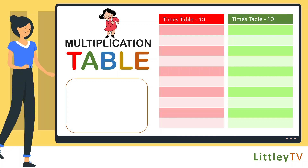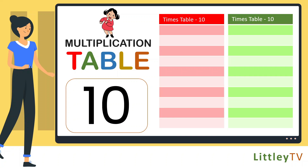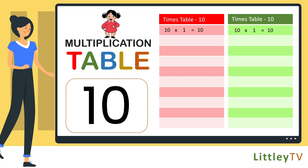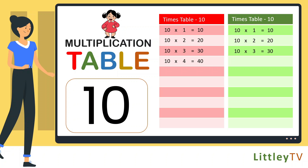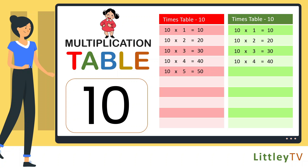Table of 10. 10 ones are 10, 10 twos are 20, 10 threes are 30, 10 fours are 40, 10 fives are 50, 10 sixes are 60.